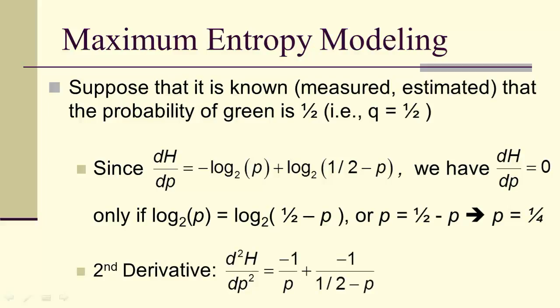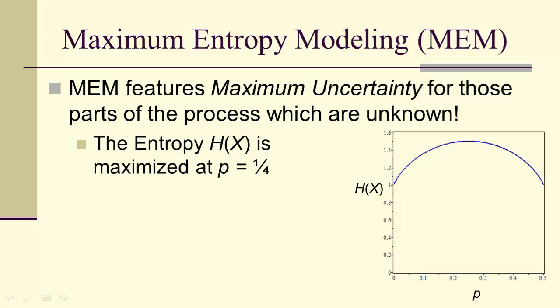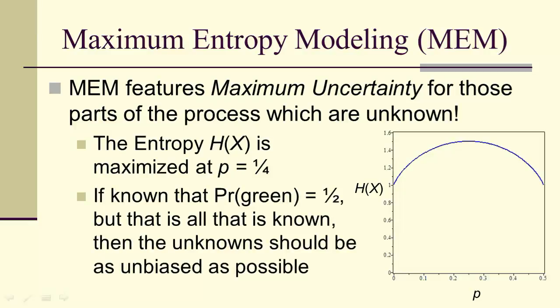The second derivative is less than zero for zero less than p less than a half. So by the second derivative test, we have a maximum of H when p is equal to a fourth. So the maximum entropy principle features maximum uncertainty for those parts of the process which are unknown. In our example, the maximum for p is a fourth. So if it's known that the probability of green is a half, but that's all that's known, then the unknown should be as unbiased as possible. So the p equals a fourth and one-fourth for the other probability also.